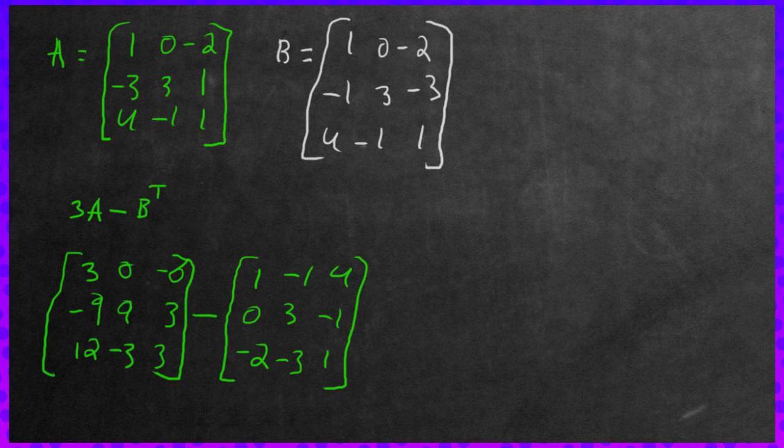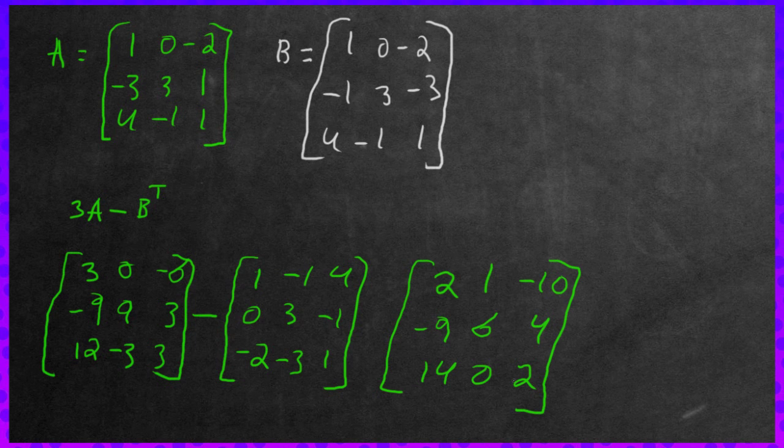Now we just subtract them. And it's very simple to subtract matrices. You just focus on the individual components and subtract away. So 3 subtract 1, 2. 0 subtract negative 1, that would be positive 1. Negative 6 subtract 4 is negative 10. Negative 9 subtract nothing, negative 9. That would be a 6. This here would be a positive, so 4. 12 subtract out would make it a 14 right there. And this would give you a 0. And lastly, that would give you a 2. All you do is just subtract all the components. It's very simple. That would be the 3A minus the transpose of B.